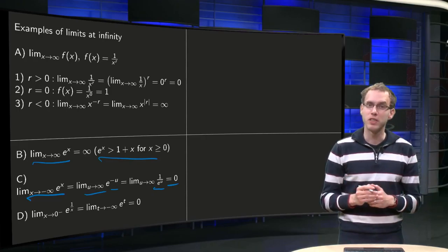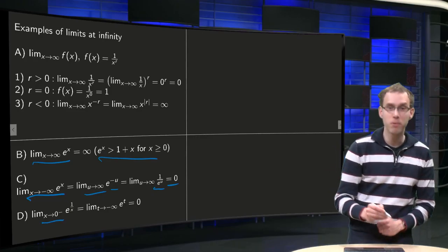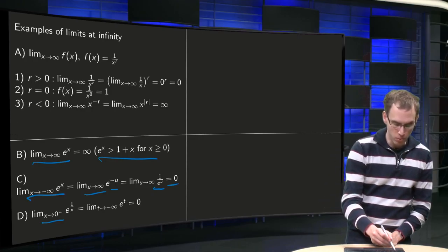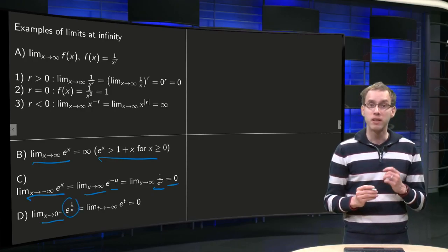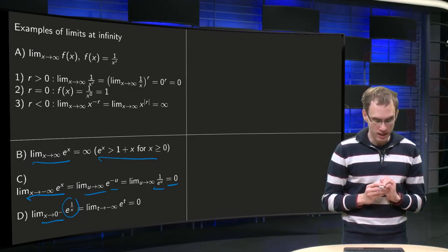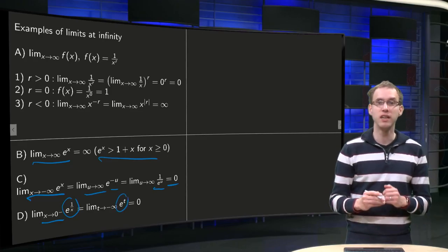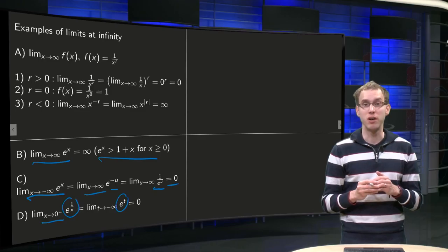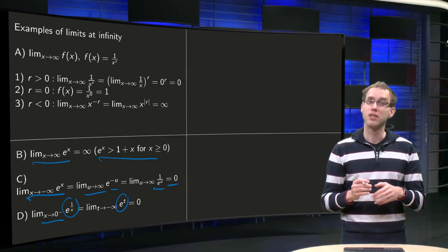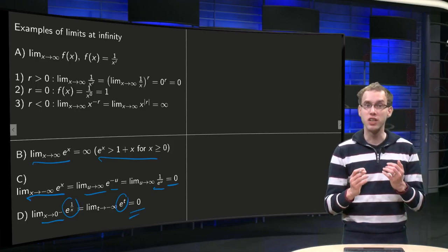Now we take one which is a bit more nasty: x goes to 0 from the negative side of e to the power 1 over x. We have to pay a bit more attention here — we can take t equals 1 over x, then we get e to the power t. Going to 0 from the minus side means that t goes to minus infinity, so we are back in the previous case and we know that limit equals 0.